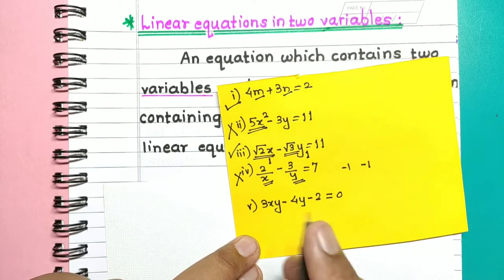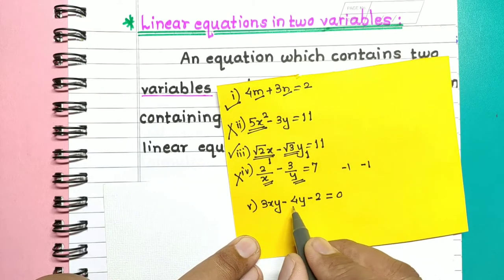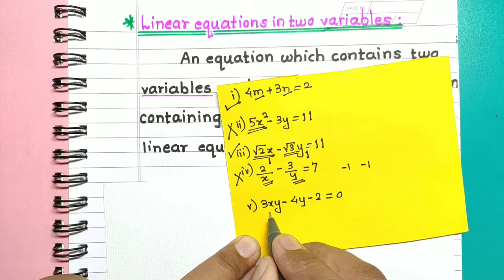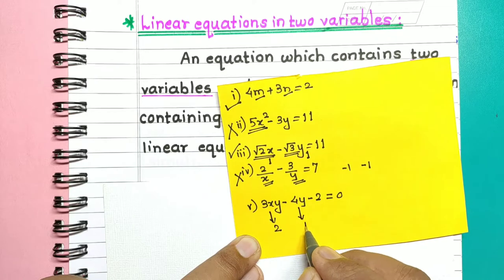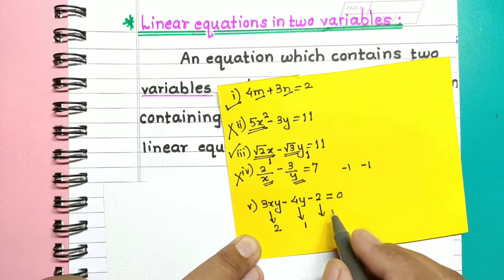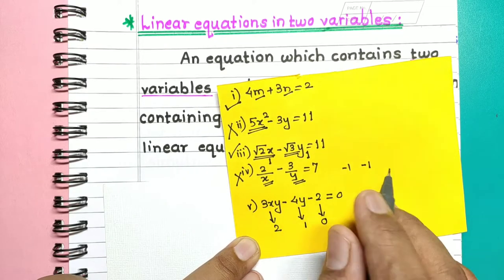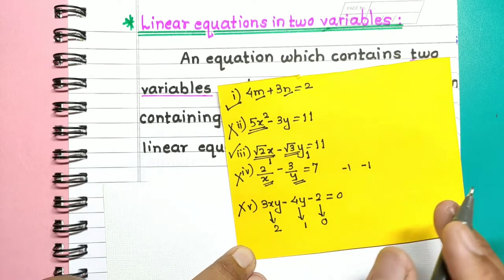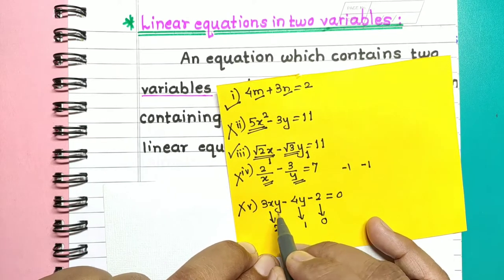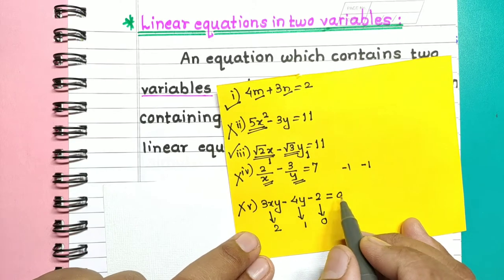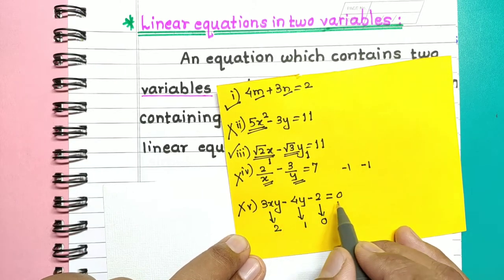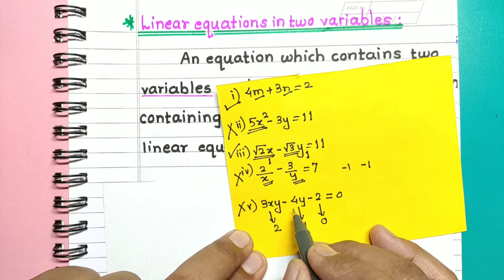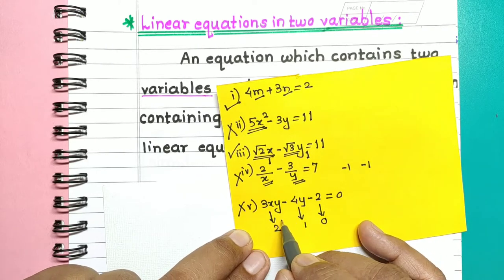Consider the next example: 3xy minus 4y minus 2 is equal to 0. Here the degree of the first term is 2, degree of the second term is 1, and degree of the constant term is 0. So it is not a linear equation in two variables. Although there are two variables, the condition that the degree of each term containing a variable must be 1 is not satisfied.